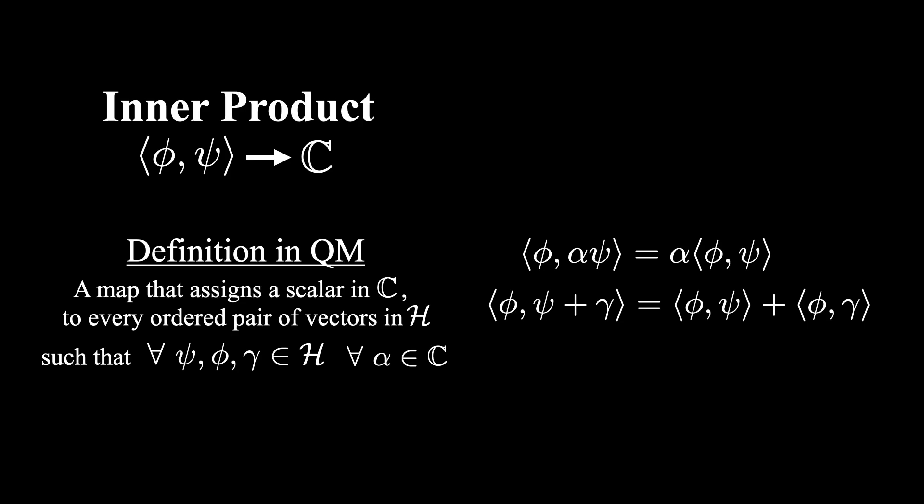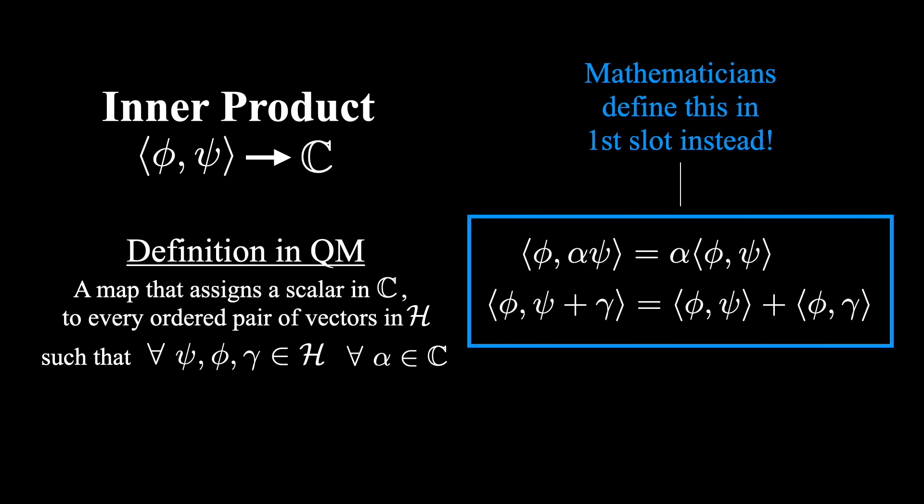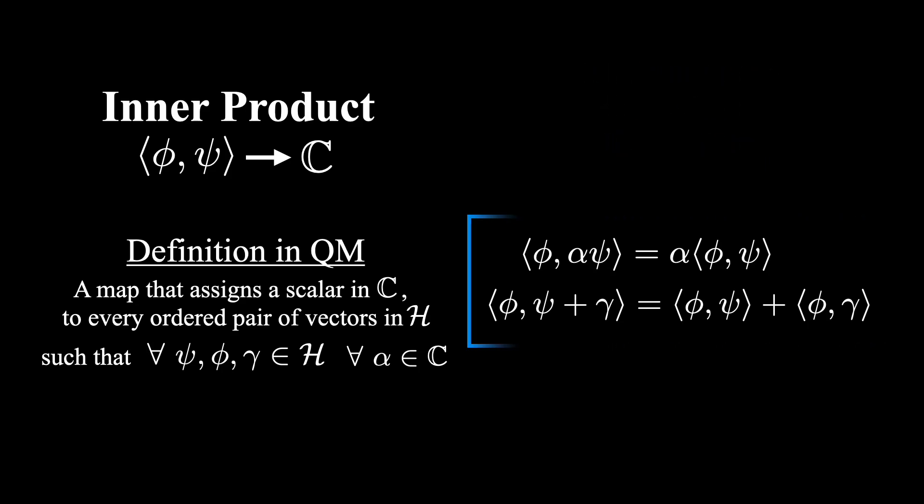This is actually the physicist's way of defining inner products. In most math books you read, you will see that both of these rules are defined in the first slot rather than the second. Now they end up both working the same way and each has their own advantages in terms of convenience of notation, but for this series of videos we will stick with this notation that is conventional in quantum mechanics.